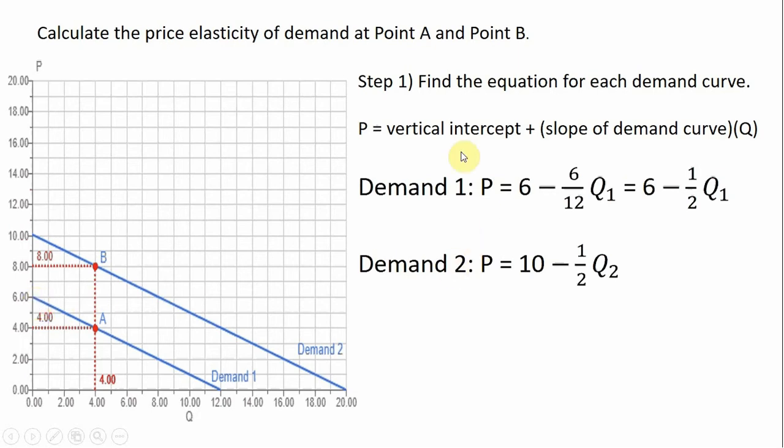For demand curve one, the vertical intercept is six. The slope is given by rise over run. So what I like to do is just take the vertical intercept and divide it by the horizontal intercept, so six divided by twelve. And since this is a downward sloping line, it's minus six divided by twelve. So demand one is P equals six minus one half Q subscript one. And likewise, the equation for demand curve two: vertical intercept 10, still a slope of one half. So P equals 10 minus one half Q subscript two.